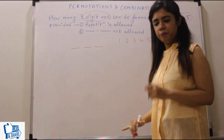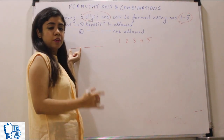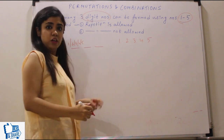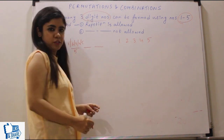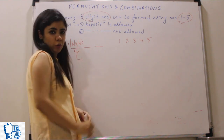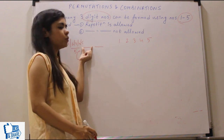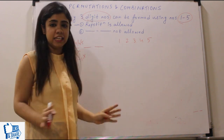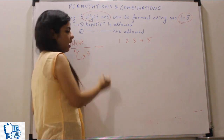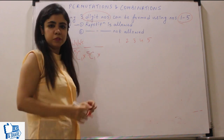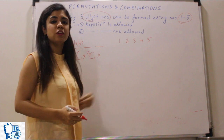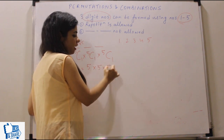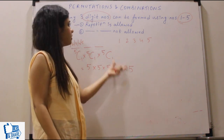The first case is repetition is allowed. For the first position, I can place any of the five numbers — 1, 2, 3, 4, or 5 — so I have 5 options. Since repetition is allowed, for the second position I also have 5 options, and similarly for the third position also 5 options. So the answer is 5 × 5 × 5 = 125.